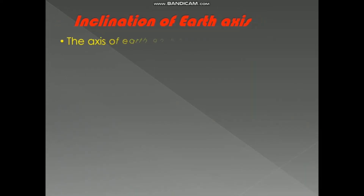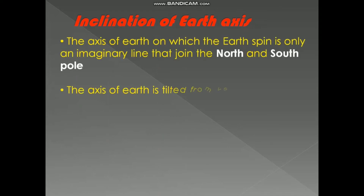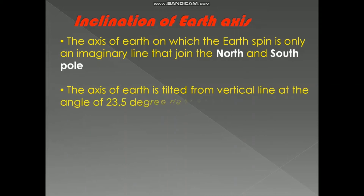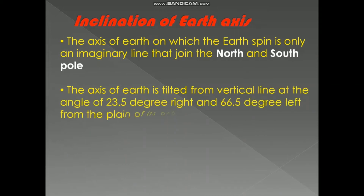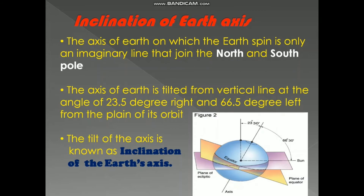Now, inclination of the earth's axis. The axis of the earth on which the earth spins is only an imaginary line that joins the north pole and the south pole. The axis of the earth is tilted from the vertical line which passes through the center of the earth at an angle of 23.5 degrees, or 66.5 degrees from the plane of its orbit. This tilt of the axis is known as the inclination of the earth's axis.